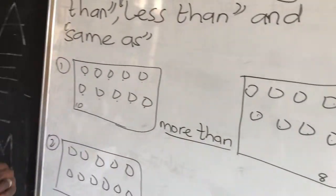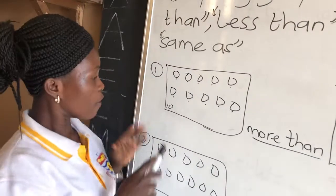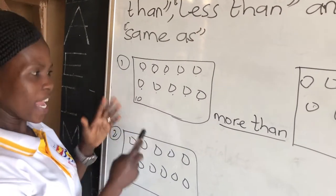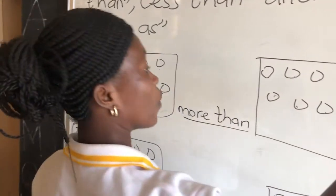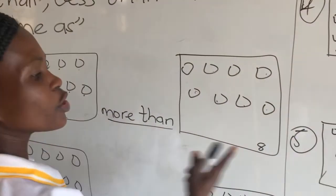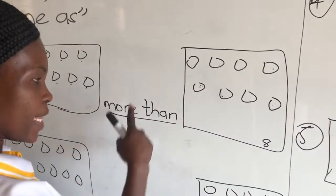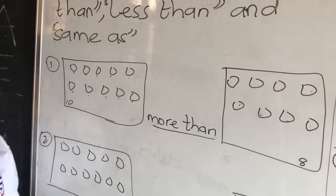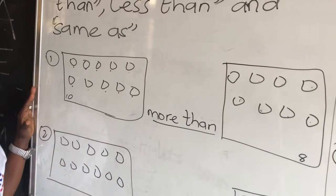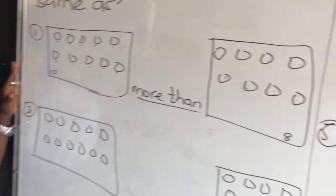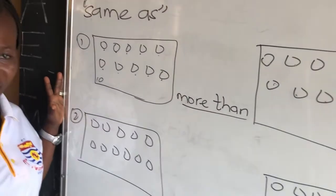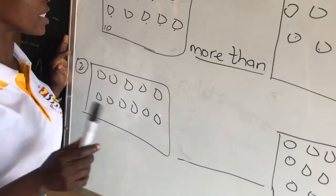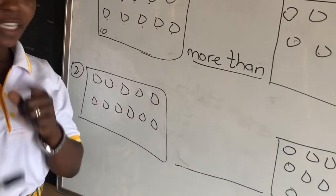Bear in mind, we always read from our left side. If you want to read from your right side, surely you will tell me 8 is less than 10. But the correct way of reading is from your left side, not the right side. Always read the numbers from your left side.